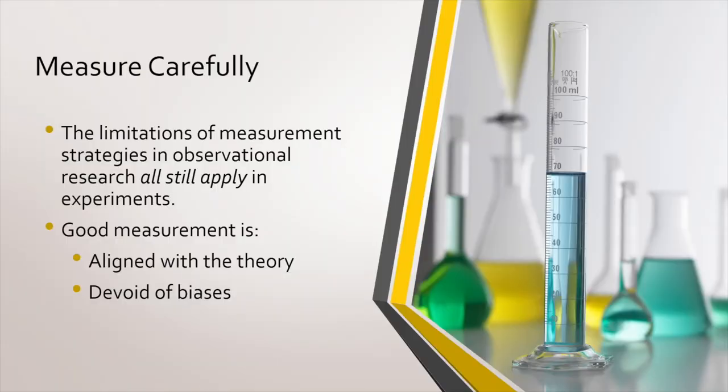Good measurement is aligned with your theory — whatever you believe the effect of your treatment will be is what you need to measure as directly as possible. One beautiful thing about experiments is you know the theory upfront, and pre-registration has become a big part of experimental design, especially in computational social science. We should state from the moment we design the experiment what treatment we want to implement and how we think it will affect the outcome. Good measurement should also be devoid of biases to the extent possible, though that's hard especially with survey data.